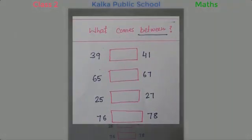Now move to between. In between 39 and 41, what would be the answer? 40. Between 65 and 67 will come 66. Between 25 and 27, 26. Between 76 and 78, 77.